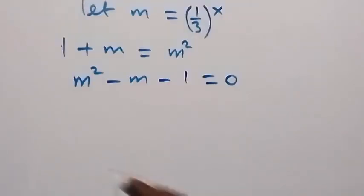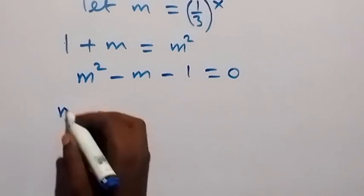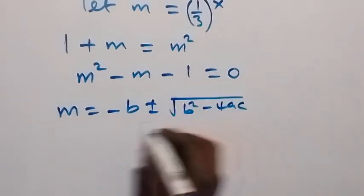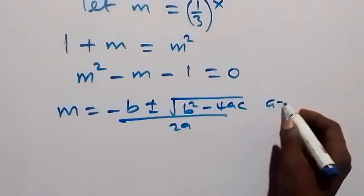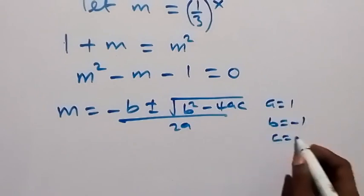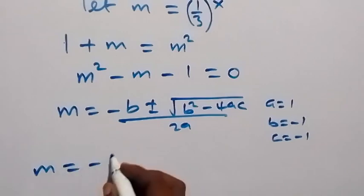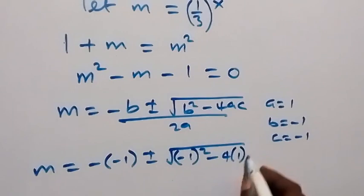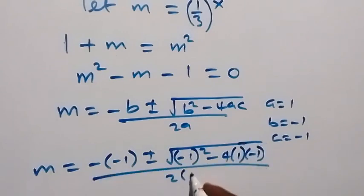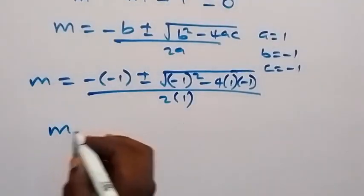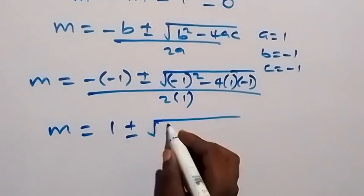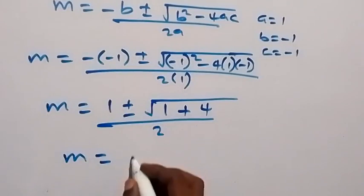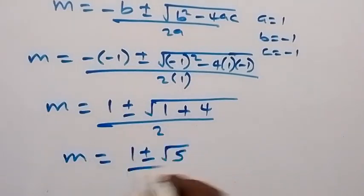Using the quadratic formula: m equals (−b ± √(b² − 4ac)) / (2a). Substituting a = 1, b = −1, c = −1, we get m equals (1 ± √(1 + 4)) / 2, which gives m equals (1 ± √5) / 2.